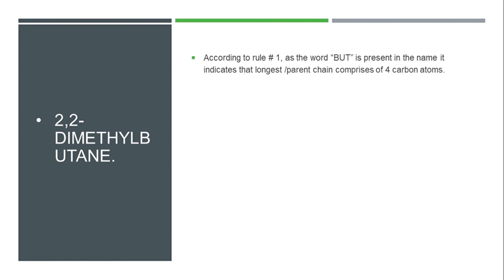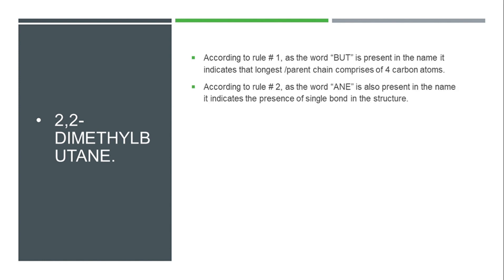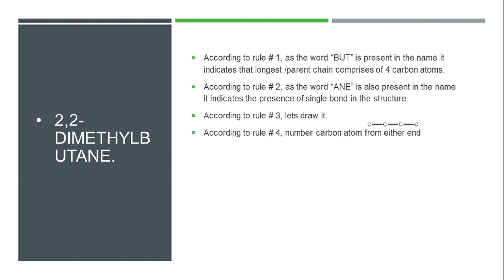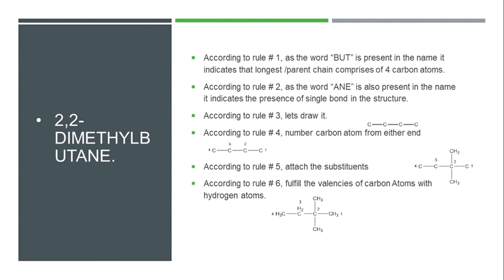The next part is 2,2-dimethylbutane. Because the phrase 'but' is present, that indicates only 4 carbon atoms. 'Ane' indicates single bonds between the carbon atoms. When we draw it according to rule 3, this gives us the carbon skeleton. According to rule 4, when we number the atoms, we attach 2 methyl groups at the second carbon atom according to rule 5. At the end, this will be the structure of 2,2-dimethylbutane.